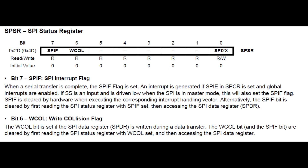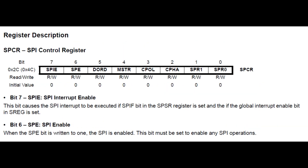The next register is the SPI status register at memory location hex 4D in RAM. We want to look at bit 7, called the SPI interrupt flag (SPIF). When a serial transfer is complete, the SPIF flag is set. So when we write a byte to the data register and it starts shifting out, we have to wait until bit 7 of the SPI status register goes high before we can send the next byte.